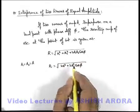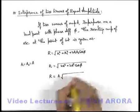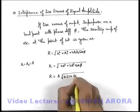Here we can take this A common out, so this R will be A root of twice of 1 plus cos φ.